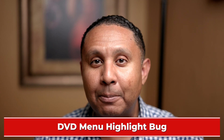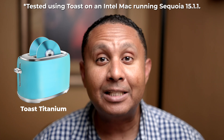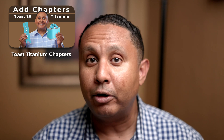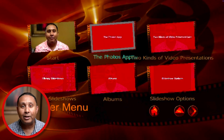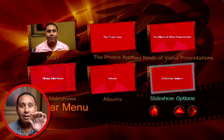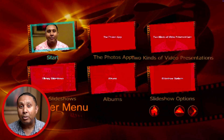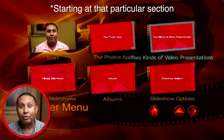The first bug I'm going to talk about is something that I call the DVD menu highlight bug. This seems to affect only Toast 20 Titanium, at least the latest version of it. What happens is you create your DVD menu, you burn your disc, and you play it back on your Mac — it works fine. As you highlight the different chapters you may have put in your video, you can see which one is selected and you can press the button to play just that particular section.